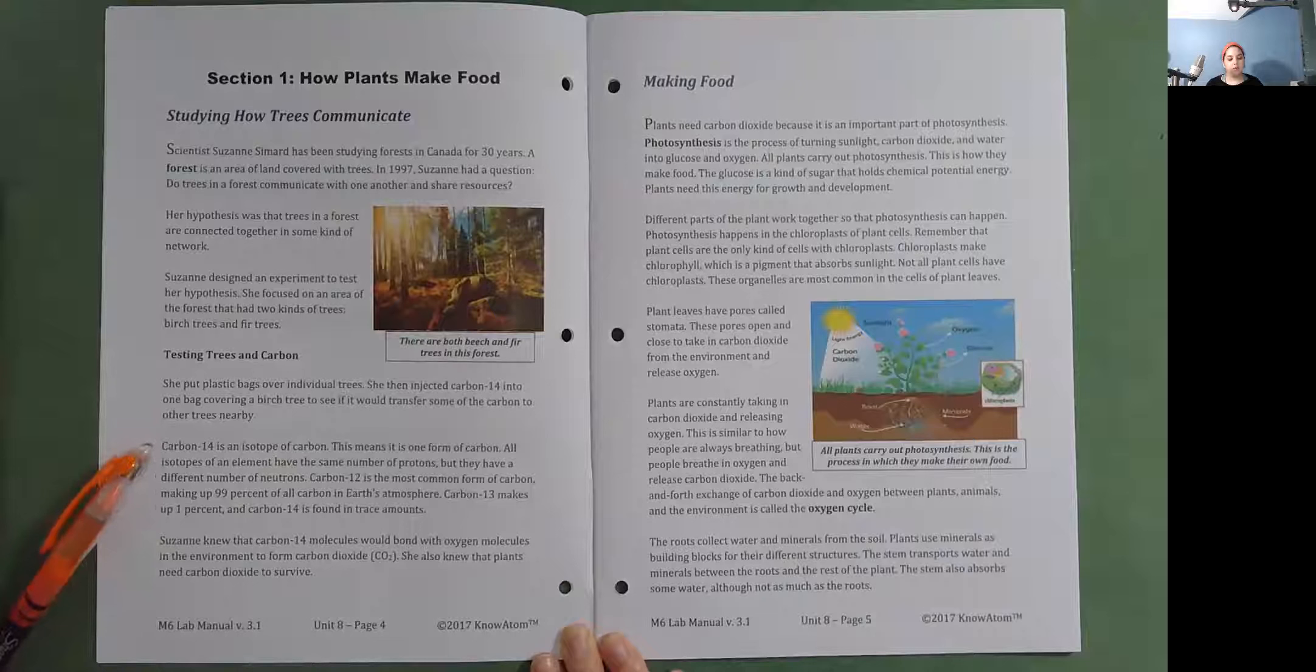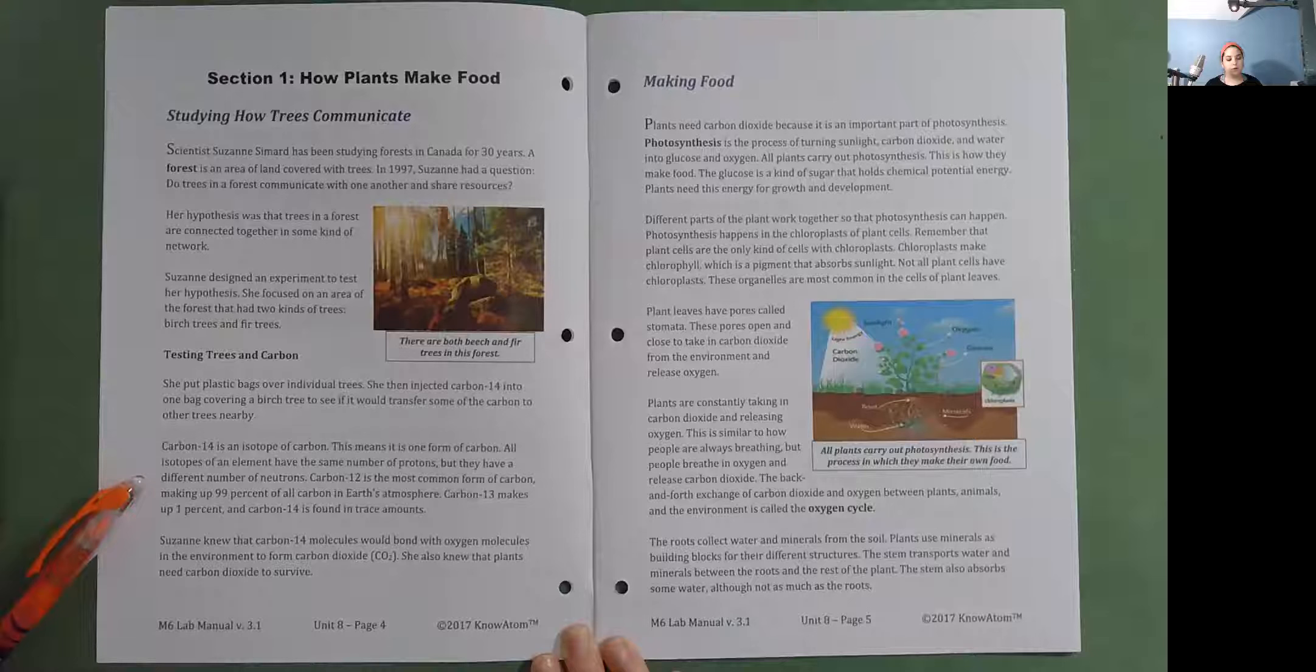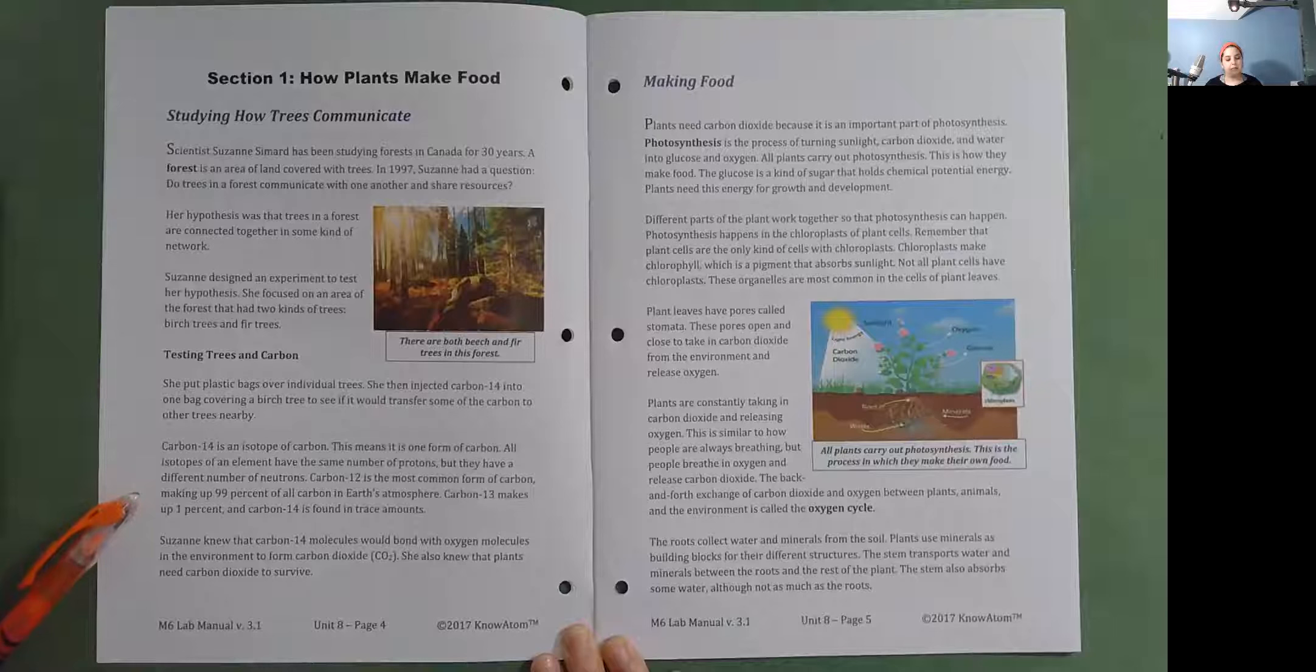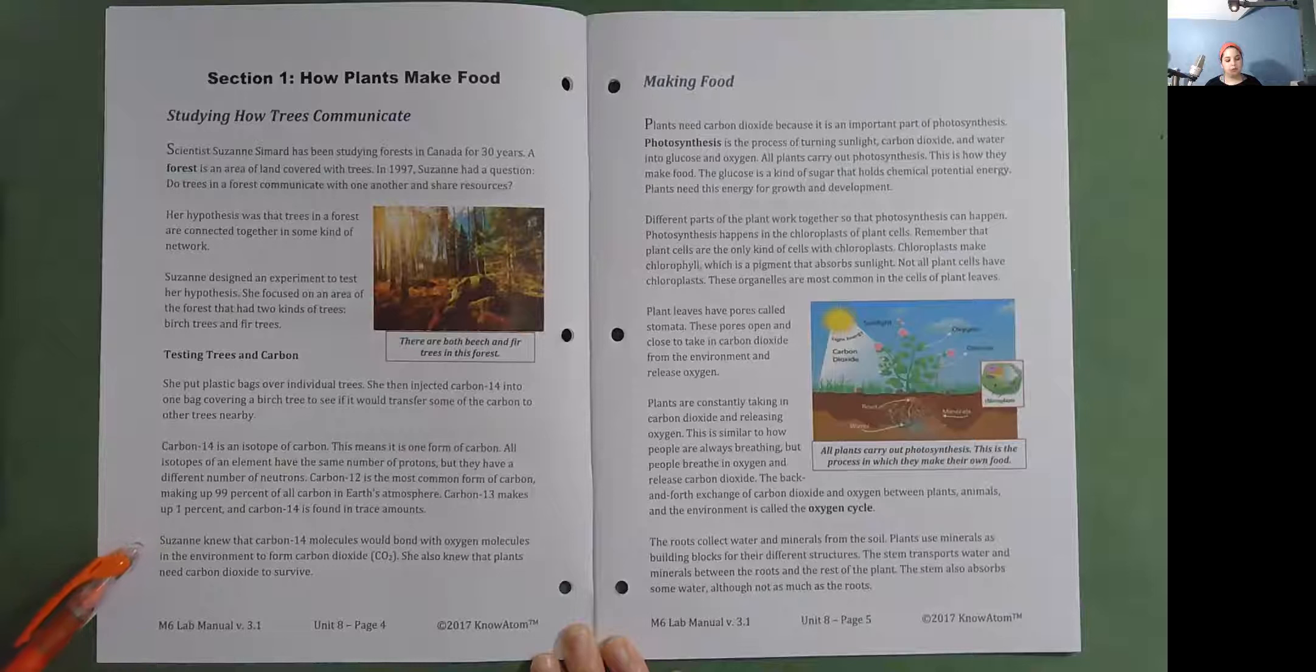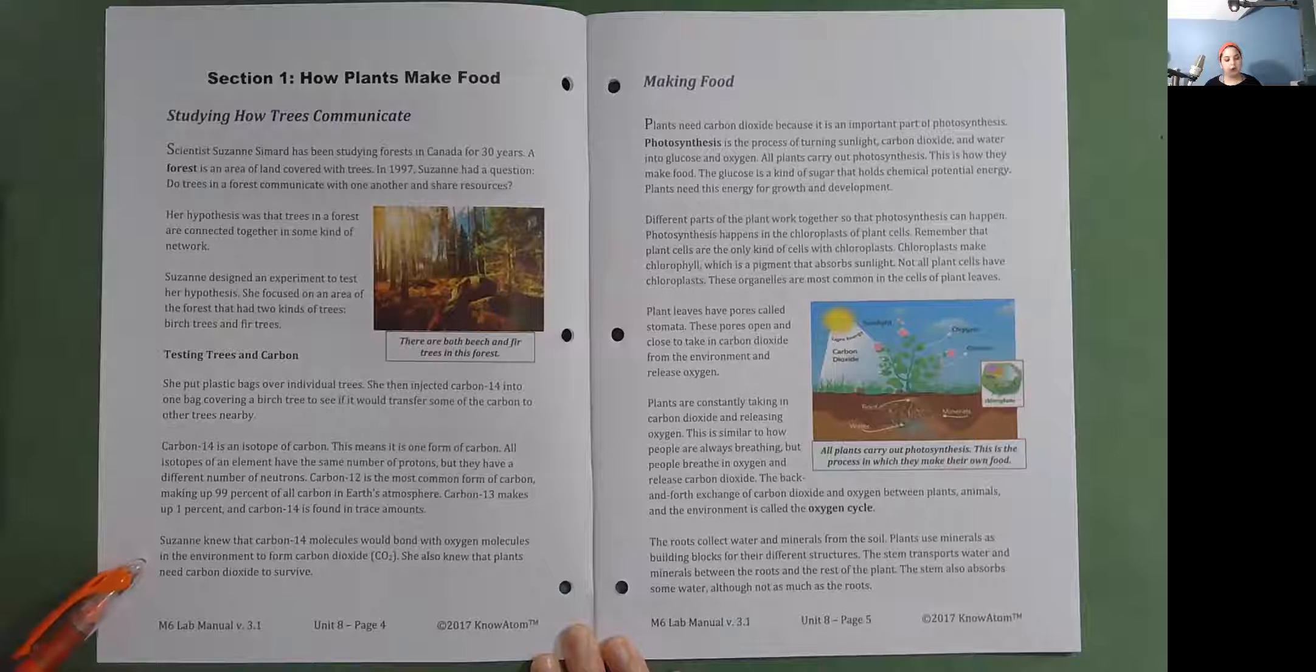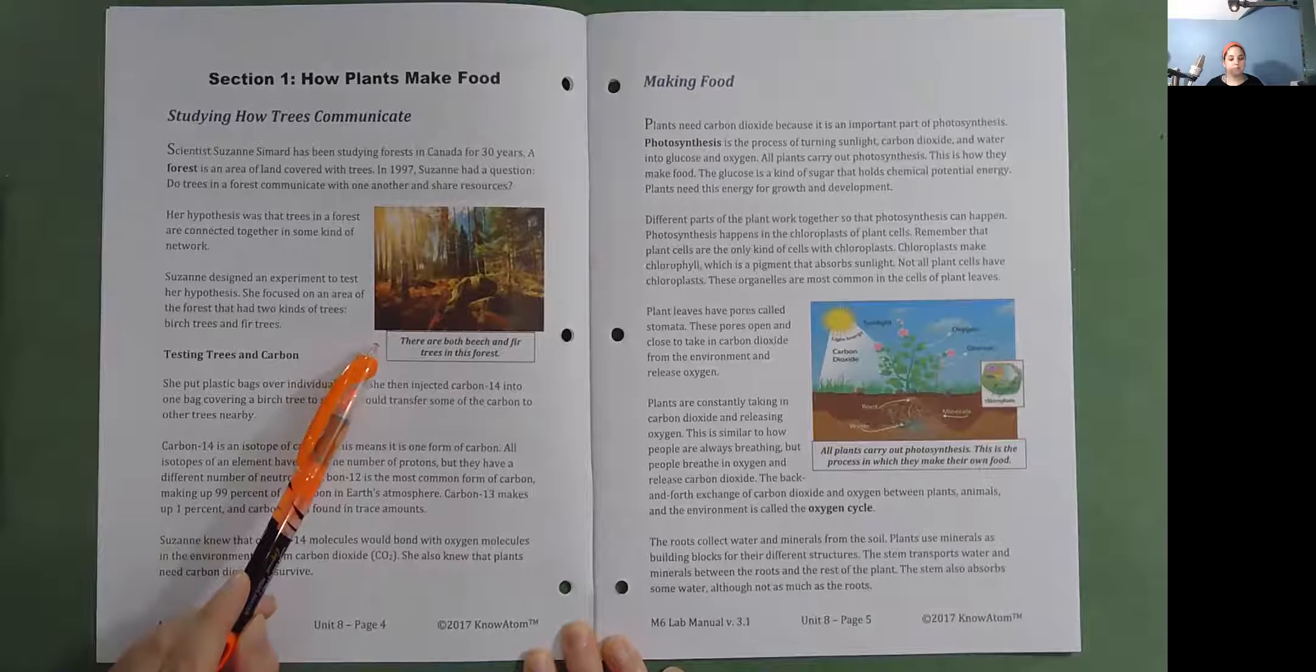Carbon-14 is an isotope of carbon. This means it is one form of carbon. All isotopes of an element have the same number of protons, but they have different numbers of neutrons. Carbon-12 is the most common form of carbon, making up 99% of all carbon in Earth's atmosphere. Carbon-13 makes up 1%, and carbon-14 is found in trace amounts. Suzanne knew that carbon-14 molecules would bond with oxygen molecules in the environment to form carbon dioxide. She also knew that plants need carbon dioxide to survive. There are both beech and fir trees in this forest.